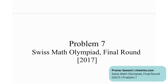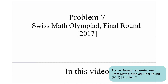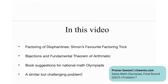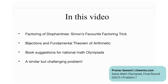This is problem number seven from the Swiss Math Olympiad final round in the year 2017. We're going to talk about how to factorize certain Diophantine equations using SFFT — Simon's Favorite Factoring Trick — and then we'll also cover bijections and the fundamental theorem of arithmetic.